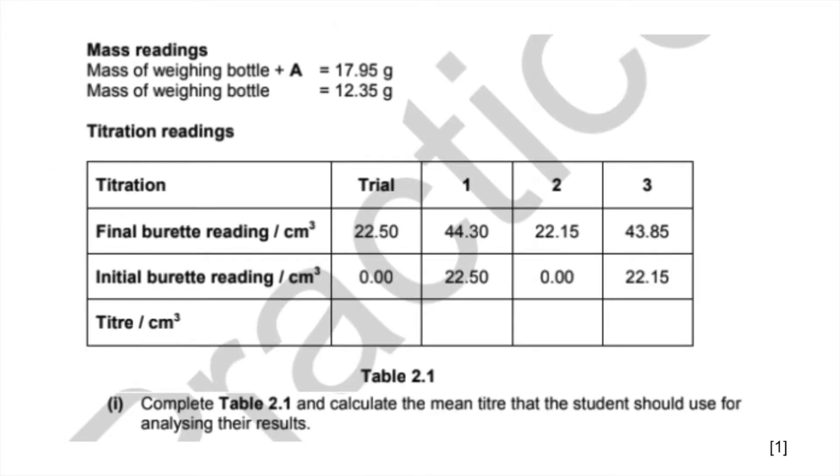Part one: we're going to complete the table and calculate the mean titre that the student should use for analyzing the results. The titre is the difference between the initial and final burette readings. Please remember to record it to the nearest 0.05 cm³.